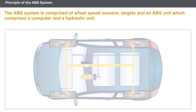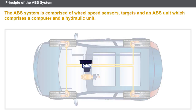The ABS system comprises the following elements: wheel speed sensors, targets, and an ABS unit. This ABS unit comprises a computer, a hydraulic unit, and a motor driving a hydraulic pump.